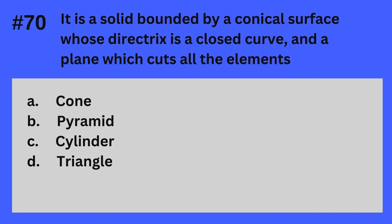Question 70. It is a solid bounded by a conical surface whose directrix is a closed curve and a plane which cuts all the elements. A. Cone, B. Pyramid, C. Cylinder, D. Triangle. The answer is A — Cone.